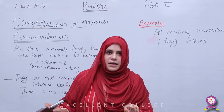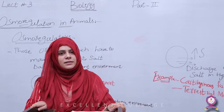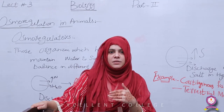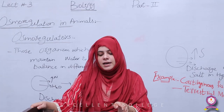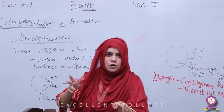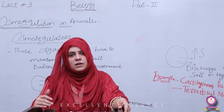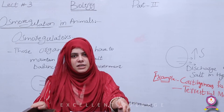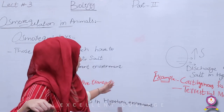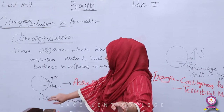Next, Osmo Regulators — यह animals की दूसरी type है। इसमें जो अपने water और salts के balance को change नहीं करते बाहिर environment के मुताबिक, बल्कि ये हर जगह पे adjust कर लेते हैं। These are organisms which have to maintain water and salt balance in different environments। Environment कोई भी हो — salt ज्यादा हो या water ज्यादा हो — ये अपनी body के fluid को change करते हैं। अगर बाहिर environment में water ज्यादा है, तो ये water को discharge करते हैं।